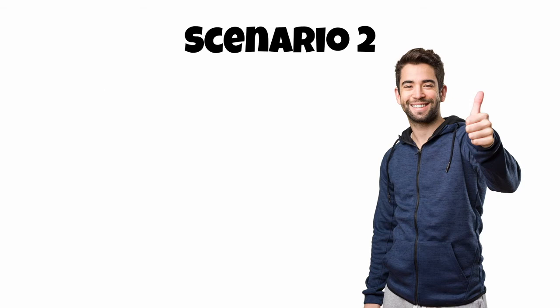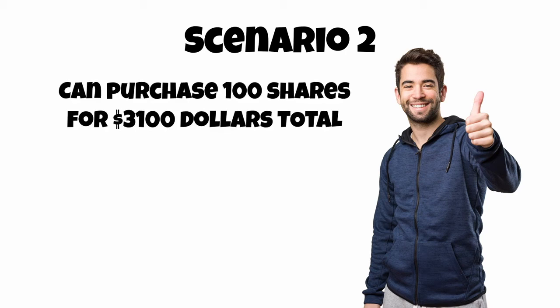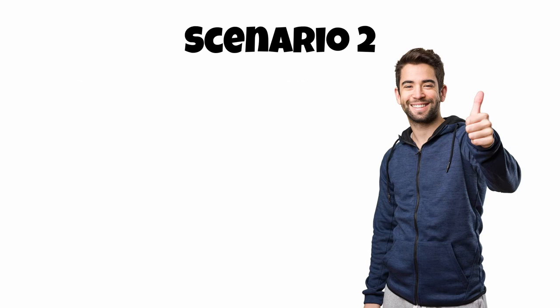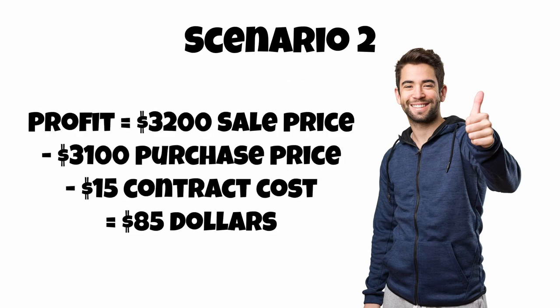Now that the price is $32, this is beneficial to Dave as he can buy 100 shares of AT&T for $3,100, but then he could immediately sell them for $3,200. His profit would be the $3,200 he could sell the stock for, minus the $3,100 he could pay for the stock, minus the $15 he paid for the contract — so he was able to gain an $85 profit.